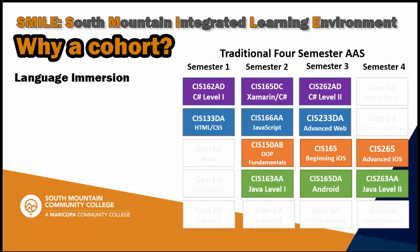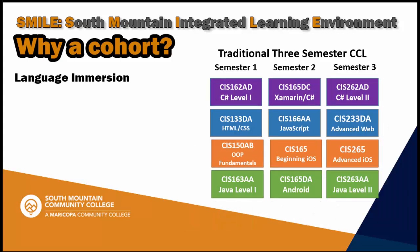If you look at how we traditionally teach our programming and mobile app development class for an AAS over a four-semester period, we would probably start you out with C-Sharp and maybe HTML and CSS. The second semester you would do the Xamarin class or intermediate C-Sharp and JavaScript. You'd then add programming fundamentals using Swift and a first level of Java, finishing up the C-Sharp track and the Web Apps track in later semesters. The problem is you're spreading out learning a language over three semesters — it's not really immersion — and you're trying to learn multiple languages at the same time. As a certificate of completion over three semesters, you might actually be trying to learn four languages simultaneously.